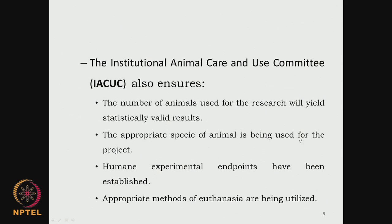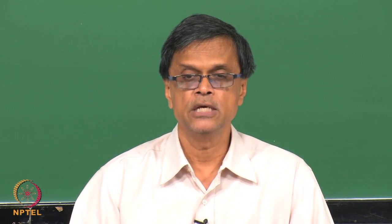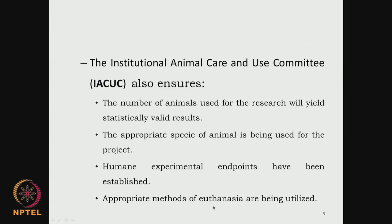They check whether the appropriate species of animal is being used for the project - if you are talking about cardiovascular stent, joint, or cytotoxicity, what type of animals are appropriate? Humane experimental endpoints have to be established - there has to be a start and end. For example, studying the biodegradability of a polymer over a period of 30 days is the start and end point. It is not open-ended research.